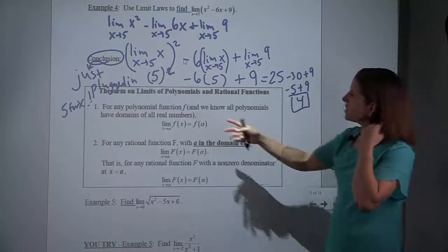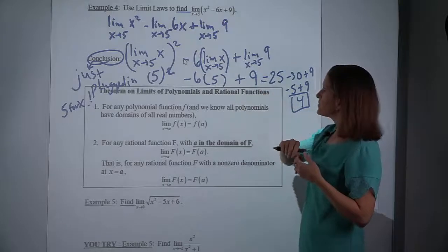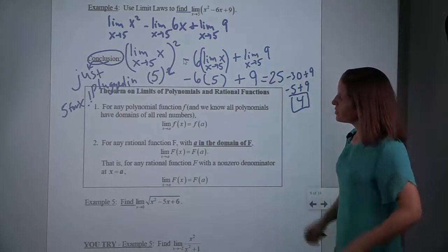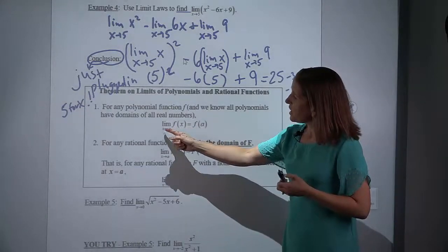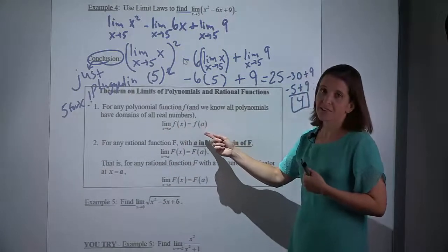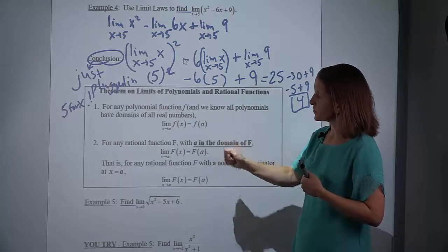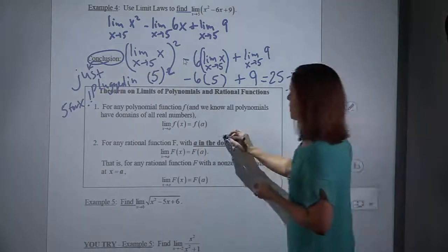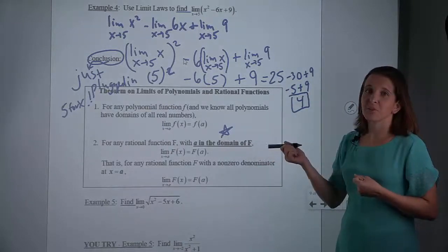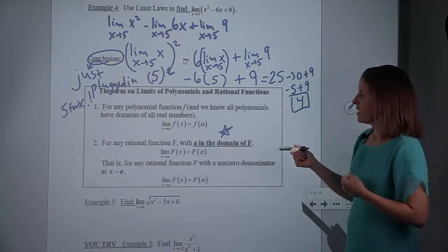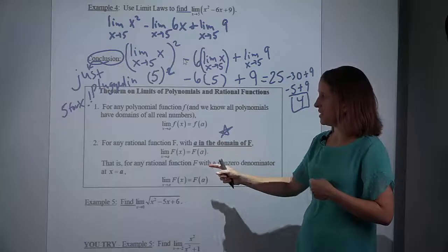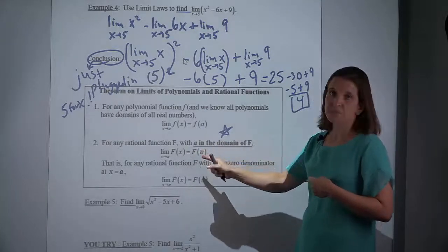This says: for any polynomial function — this is a polynomial, it's got a domain of all real numbers — if you're trying to find the limit as x approaches a of that function, you're actually going to get the same answer if you just replace x's with the value a. For a rational function, where we could have division by 0 issues, the value a has to be in the domain of the function. And so if a is in the domain, then we can just substitute as well.